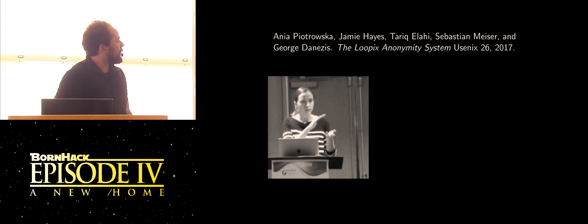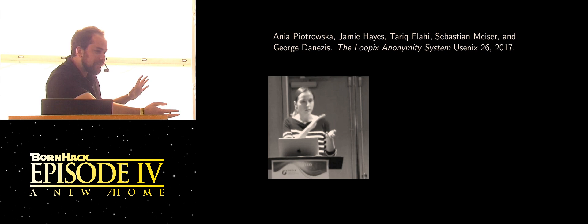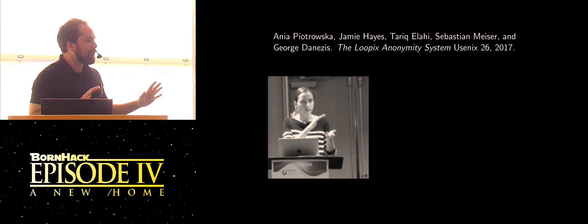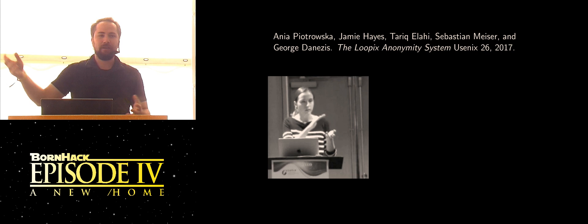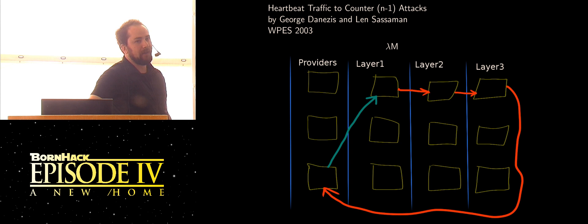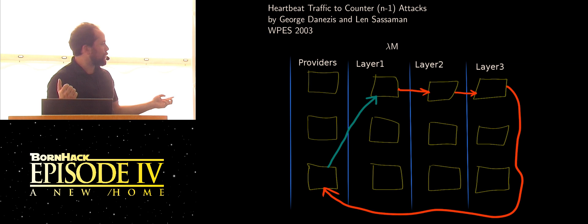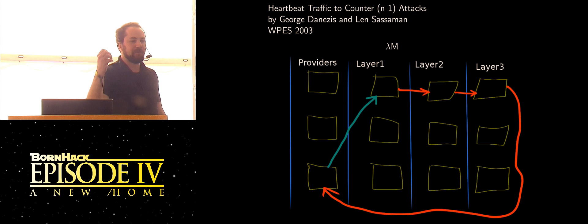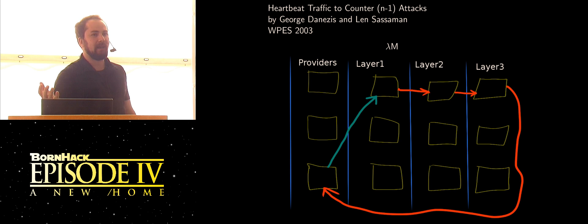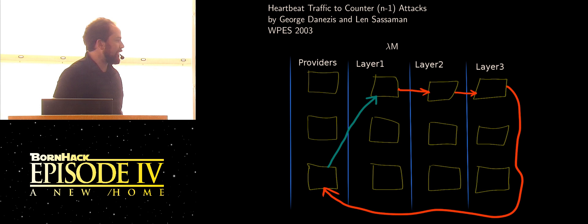The two main properties we're talking about are bitwise unlinkability and latency, and the third trick Mixnets use is decoy traffic. To attack a Poisson mix with an N-1 attack, you block all incoming messages, let the target message enter, then continue blocking. The message stays in the mix and exits — and you watch where it goes, tracing one hop of its route. If mixes send loops to themselves, they can detect if they're under attack: if the adversary is blocking incoming messages, the mix won't receive its own heartbeat. It can then send more dummy messages to confuse the attacker, or stop routing messages, escalating it into a denial-of-service attack.